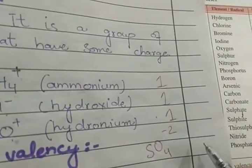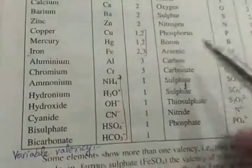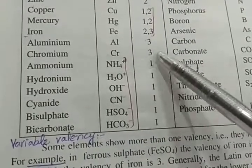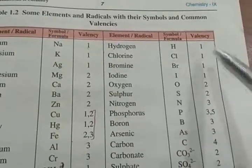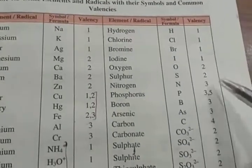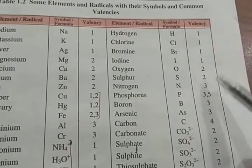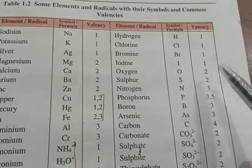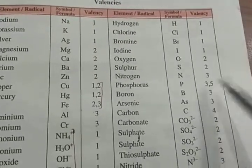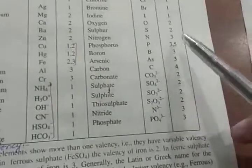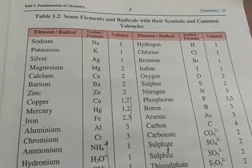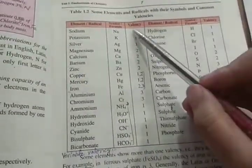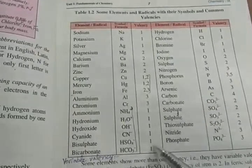For example, sulfate SO4 with -2 charge is a radical. Its valency will be 2 because the charge is 2. Further in the table: hydrogen, chlorine, bromine, and iodine have valency 1. Then oxygen and sulfur have valency 2 because in the outermost shell they will gain 2 electrons. Nitrogen and phosphorus show 3, 5 - this is variable valency. From carbonate onwards are radicals. You have to remember this table as it is - the symbols and valences. You have to remember sodium through bicarbonate and their valences.